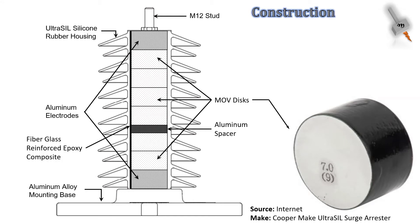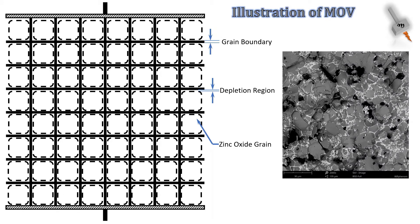So let's first understand the structure of MOV Disks. This is an illustration of MOV showing its Zinc Oxide Grains, Grain Boundary with the Depletion Layer. This illustration is not the actual representation. Actually, the MOV grain structure looks something like this. This image has been magnified 2000 times to get a proper view of the grains.